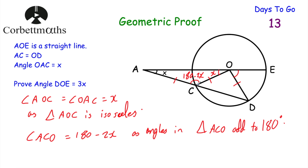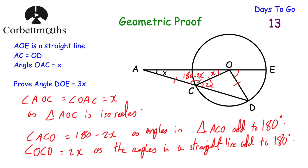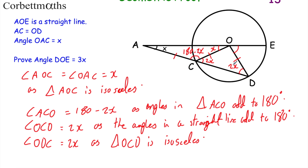Now looking at triangle OCD: ACD is a straight line, so angles ACO and OCD must add to 180 degrees. Since angle ACO is 180 minus 2X, angle OCD must be 2X. Triangle OCD is isosceles because OC equals OD (both radii), so angle ODC also equals 2X. Therefore angle COD equals 180 minus 4X, since the angles in triangle OCD add to 180 degrees.